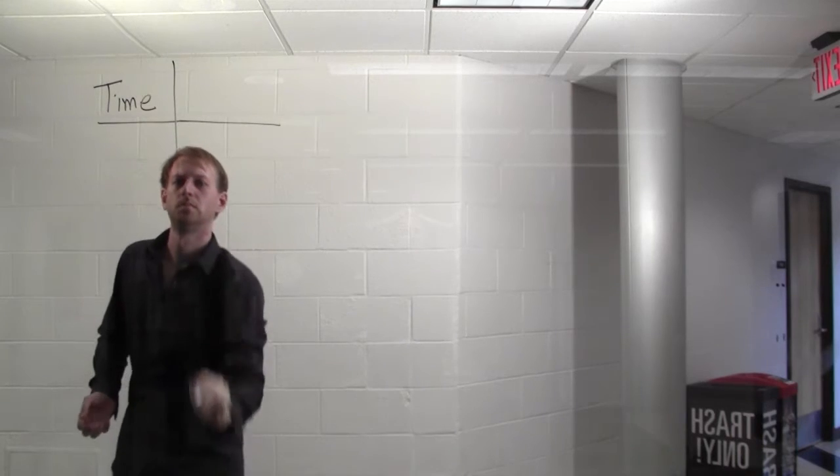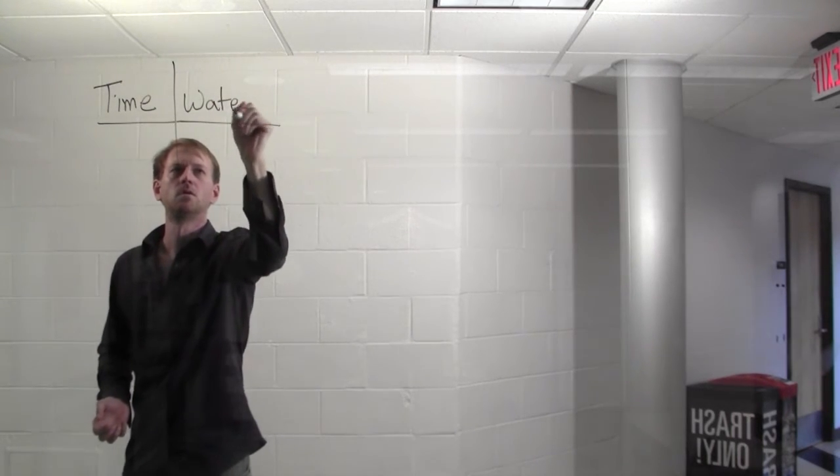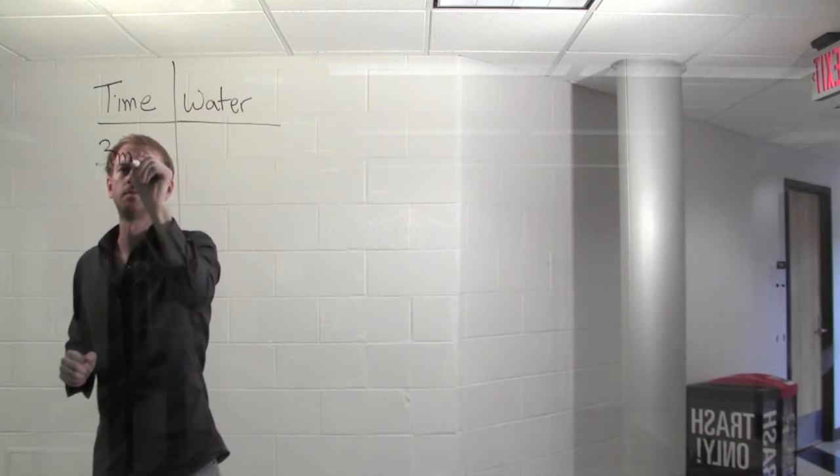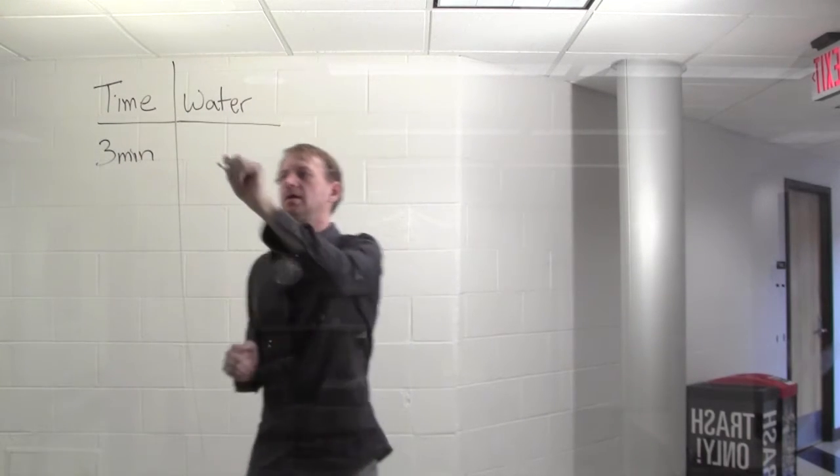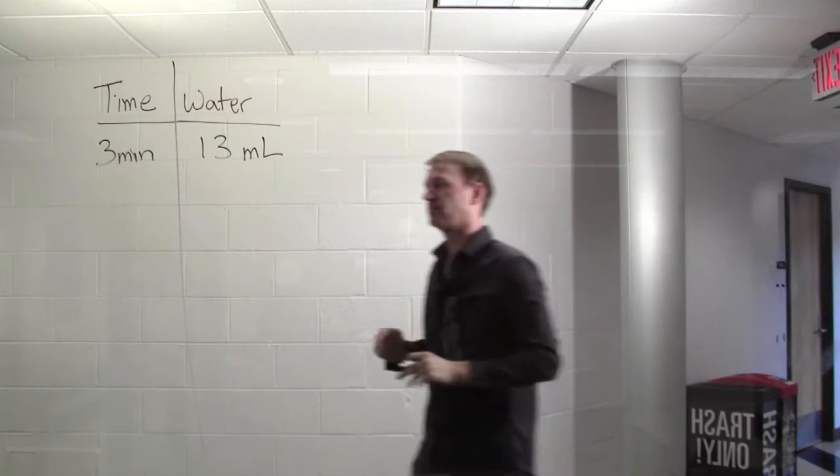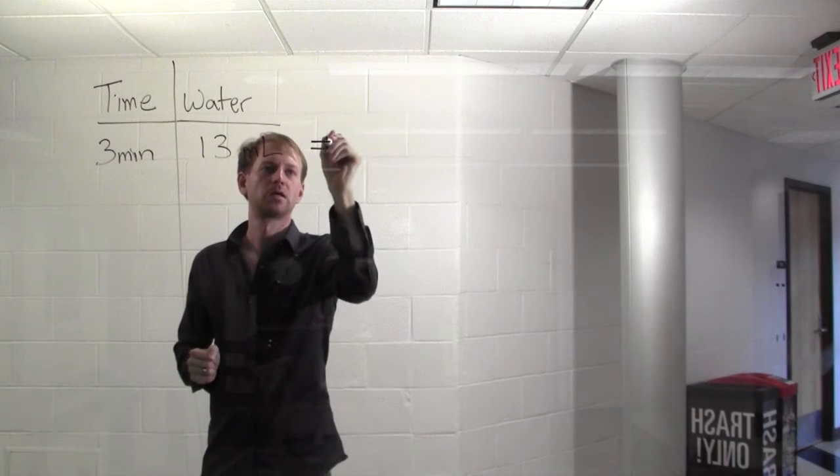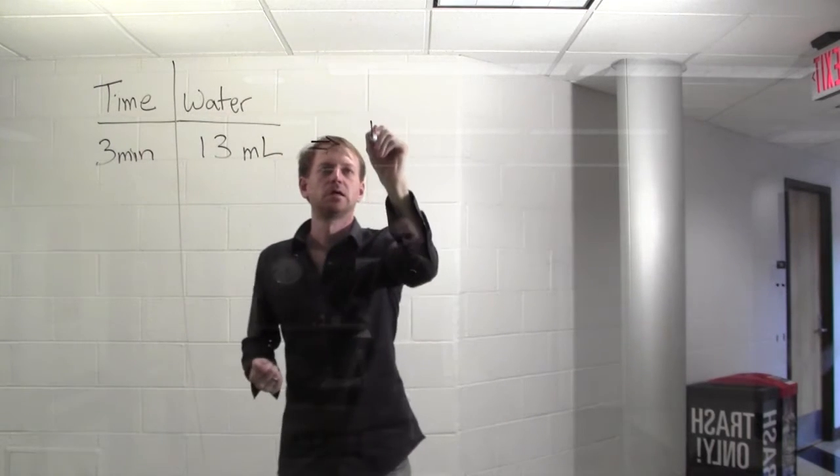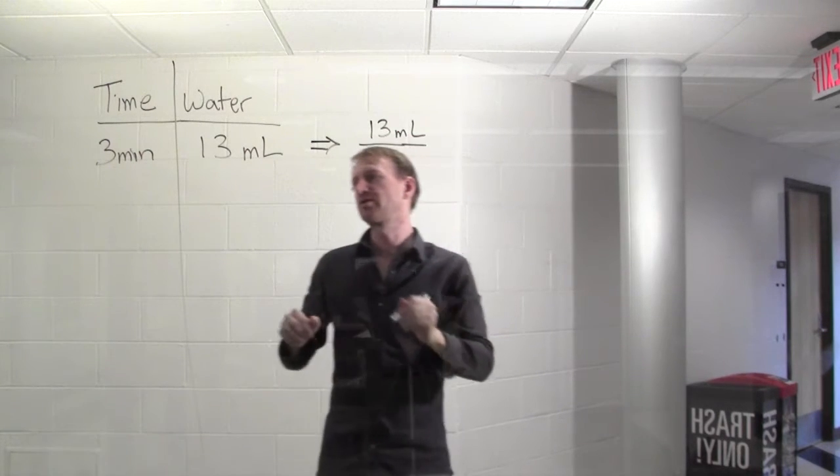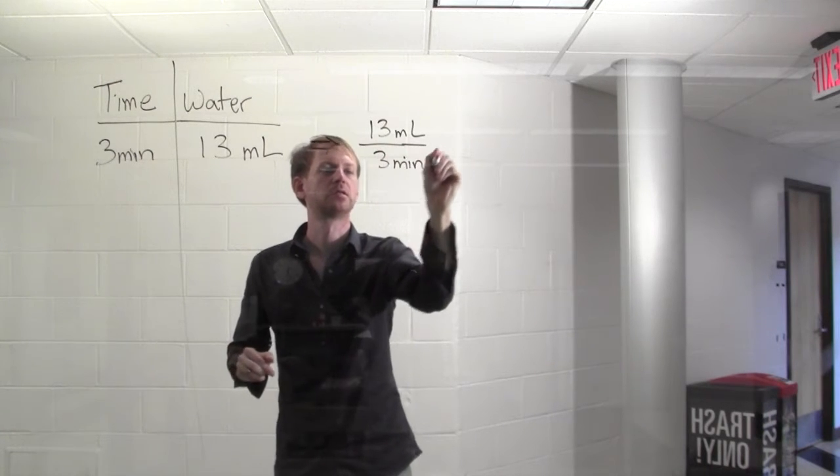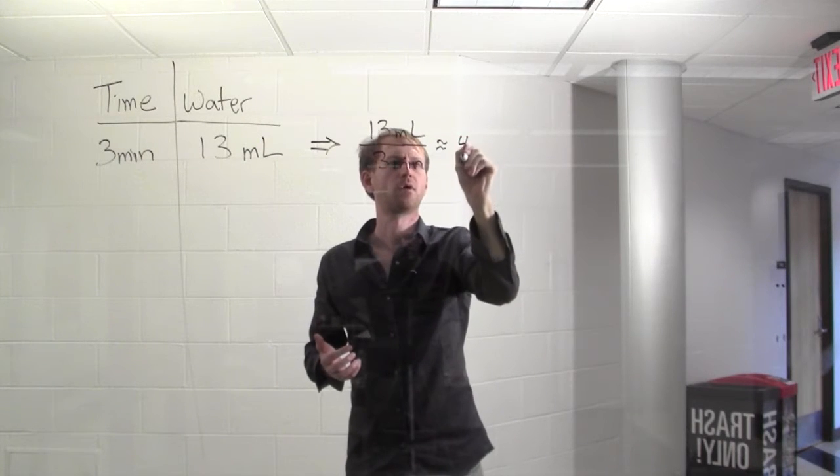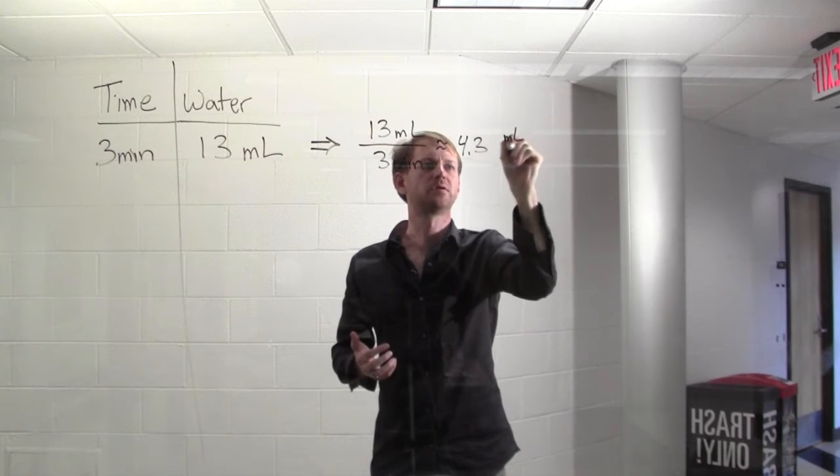Here we have time and water. After three minutes, we found that 13 milliliters of water were inside the measuring cup. This tells us that the water is entering the measuring cup at a rate of 13 milliliters per three minutes, which is equal to, or approximately, 4.3 milliliters per minute.